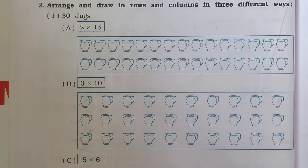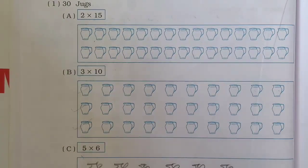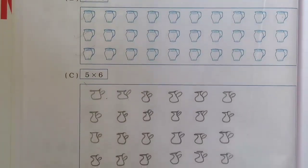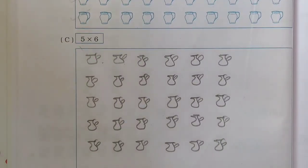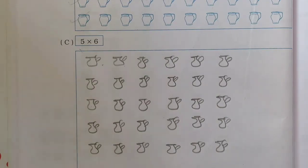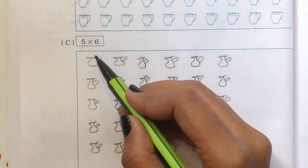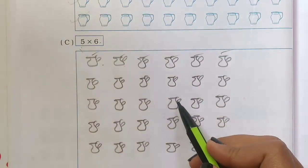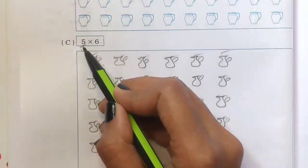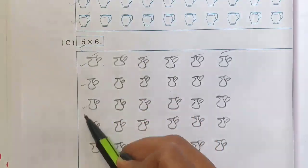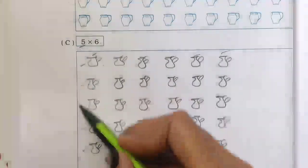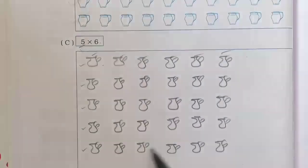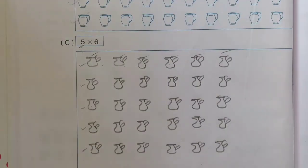These are two examples so far. Then we draw 5 times 6 jugs: counting 1, 2, 3, 4, 5, six jugs, five times. Total jugs are 30.